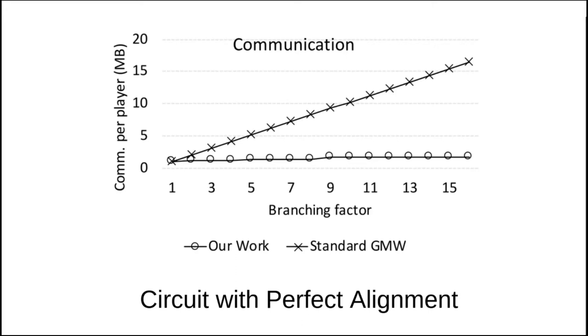First, both approaches use the same number of base OTs to set up an OT extension matrix. Second, the communication in the evaluation phase is not improved, that is in two-party computation we still use 3 bits per OT. We also emphasize that our experiment uses the same circuit in each branch, and hence we achieve perfect alignment, which we explain on the next slide. Due to the perfect alignment, our experiment shows the maximum benefit that our technique can provide.